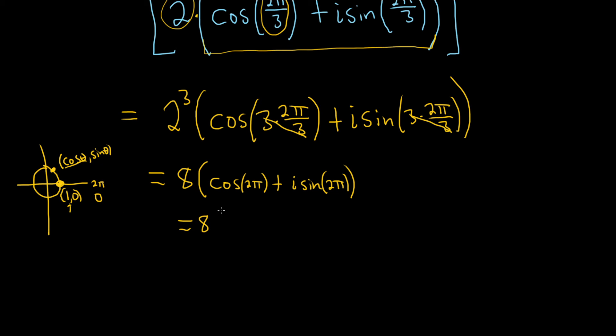So this is equal to 8 parentheses 1 plus, and then we have our i times, and then the sine of 2 pi, that must be the y coordinate, so that would be 0.